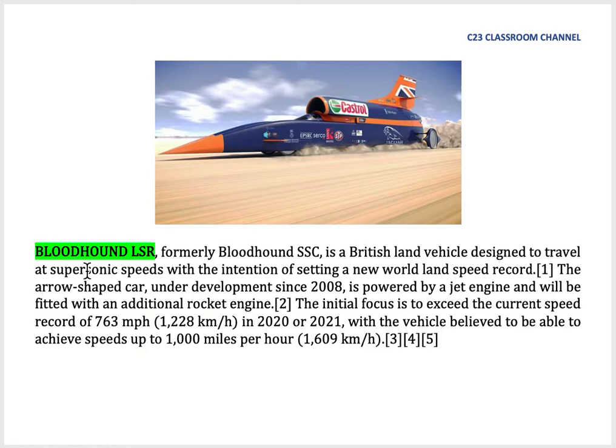This might be the fastest man-built machine on Earth's surface. It is called Bloodhound. It could reach 1,229 km/h and it is around just above Mach number 1.